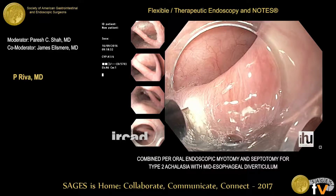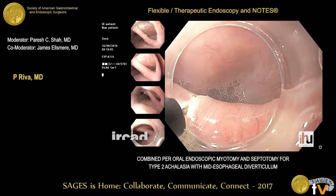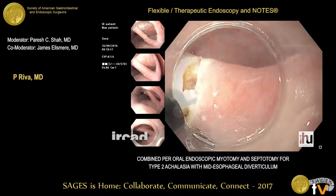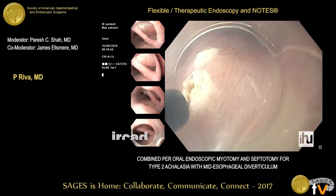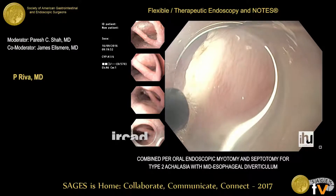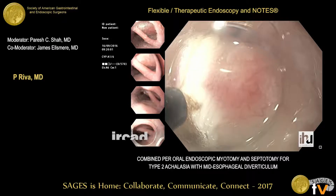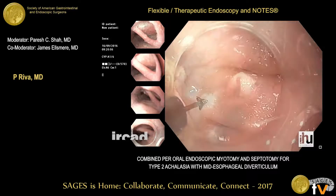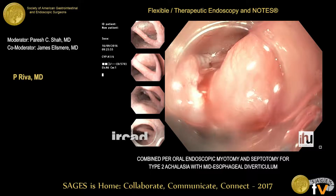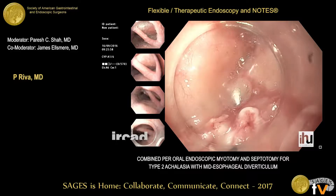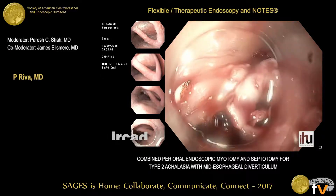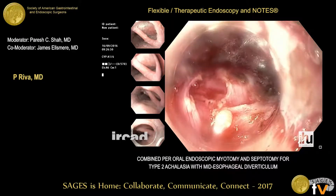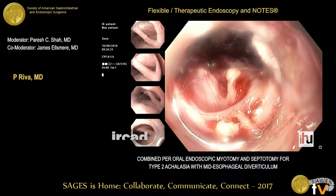The technique of mucosal dissection for POEM is similar to that carried out during esophageal ESD. We did an initial longitudinal 15–20 mm mucosal incision at the neck of the diverticulum, and then carried out a septotomy through all the muscle layers. A submucosal injection is then performed at the distal end of the initial incision to gain access to the submucosal space.